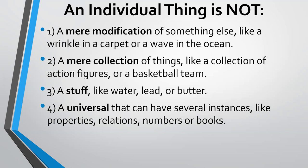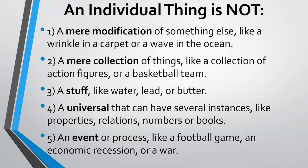Another thing an individual thing is not is a universal. Universals, as already mentioned, have several instances — these are properties like those the cat has, or relations. Universals could include numbers, and a book can be a universal in a certain way — Van Inwagen's book Metaphysics is instantiated in numerous ways. An individual thing is also not an event or a process, like a football game or an economic recession. These are processes that occur over time and are never completely present at any given point. Although we'll see there is a view in metaphysics that turns individual things into that, the common Western metaphysic denies it.